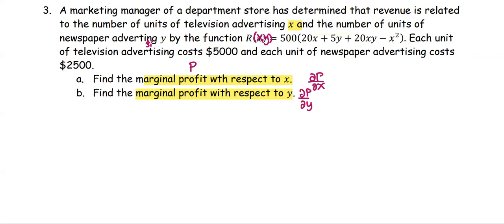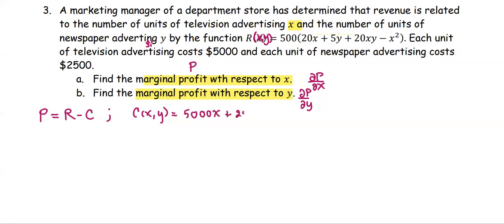We do not have the function P yet. As we recall, profit equals revenue minus cost. The revenue is given, but the cost is not directly given yet. With the information provided, the cost depends on both x and y: it costs $5,000 for each unit of television advertising, so that term is 5,000x, and each unit of newspaper advertising costs $2,500, giving 2,500y.